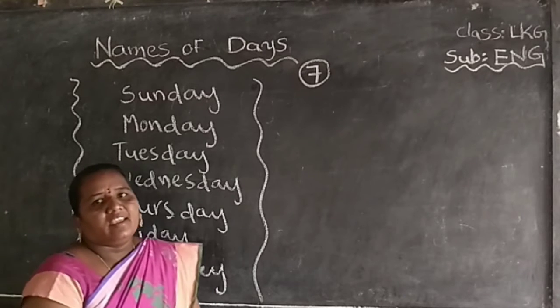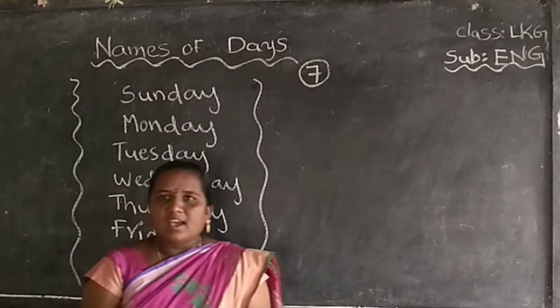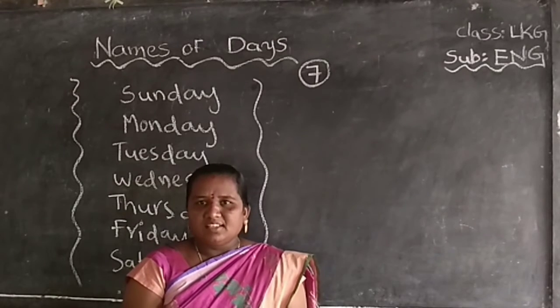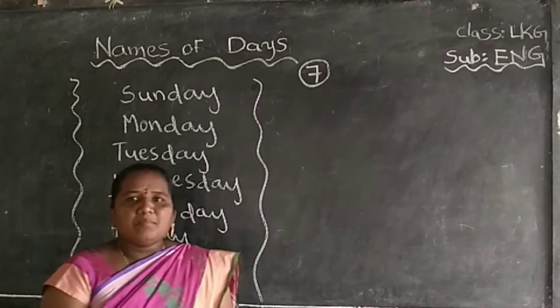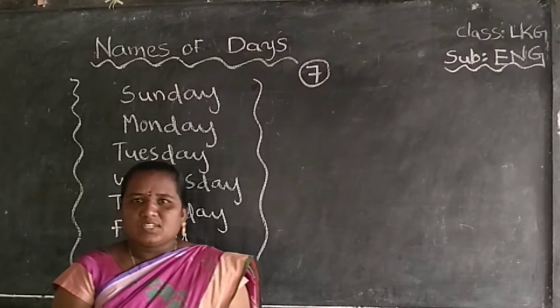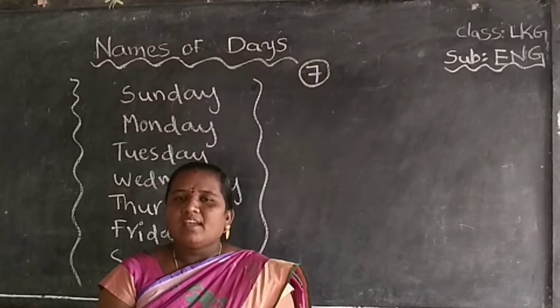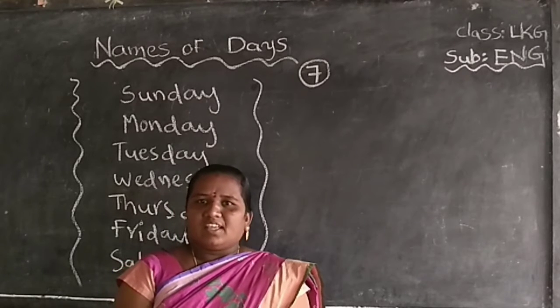Saturday. There are 7 days in a week: Sunday, Monday, Tuesday, Wednesday, Thursday, Friday and Saturday.